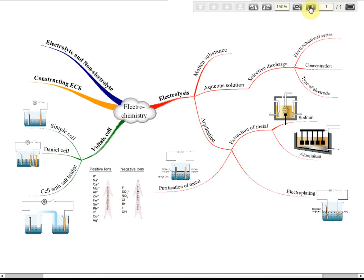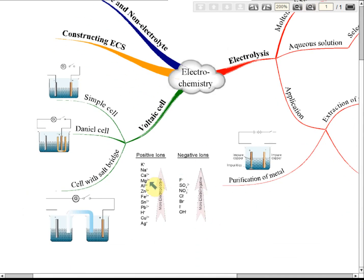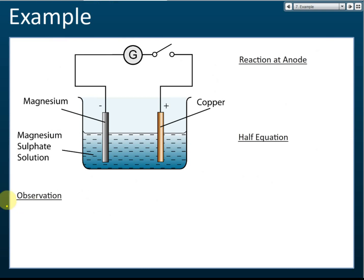Let's look at the electrochemical series — let me enlarge it. Magnesium is higher than copper in the electrochemical series. So if magnesium is higher than copper, then magnesium is the negative terminal — the one higher in the series is the negative terminal. The one lower in the electrochemical series is easier to be discharged. So magnesium is the negative terminal and copper is the positive terminal.